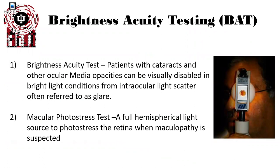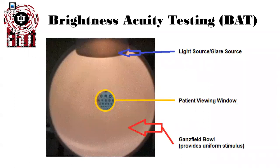Brightness acuity testing, or BAT testing — which you can see here on the right as the patient is performing it — has a couple of different features. The first BAT setting is to determine the effects of glare due to cataracts and other media opacities, and whether this is visually disabling a patient from doing the things they need to do in their life. This device can also be used for macular photostress testing, where it's a full hemisphere light source to photostress and bleach the retina to determine whether maculopathy is suspected.